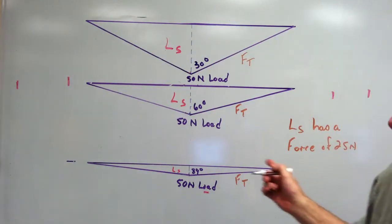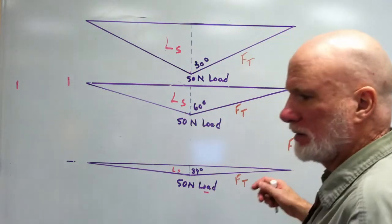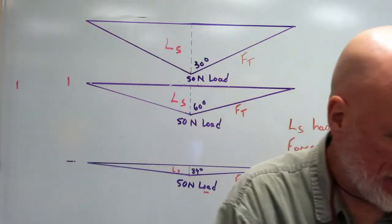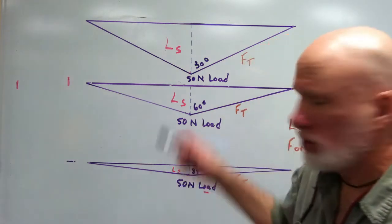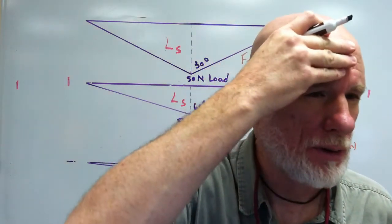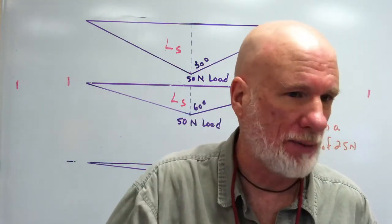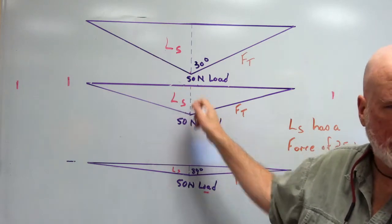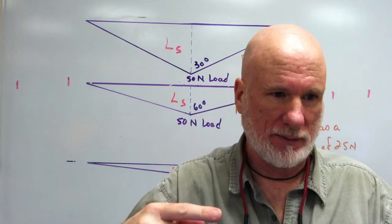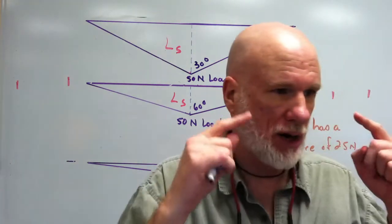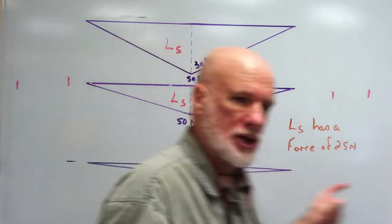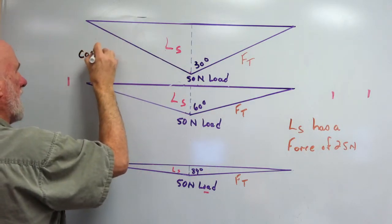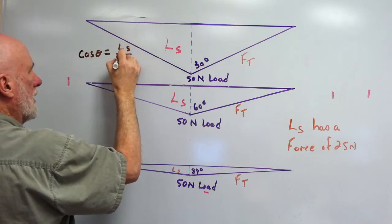Can you see that? Does that come through? Thank you very much. So, from trigonometry, this line L S is going to be adjacent. L S is not a force — L S is just a line — but that line has a force of 25 Newtons. So L S is going to be adjacent, meaning cosine theta equals L S over F T.